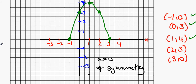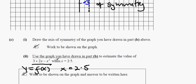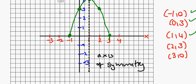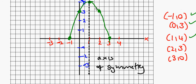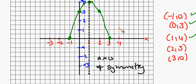Next question: use the graph you've drawn to estimate the value. Find the value of f(x) when x equals 2.5. This means draw a line going from x equals 2.5 and see what y value it gives. f(x) is the y value. So we go to x equals 2.5, draw a line up — it hits the curve and goes across — and that means y is around 1.5.